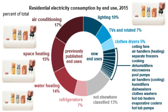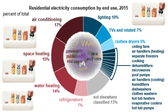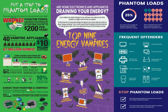Some typical offenders include cable boxes, internet modems, DVRs and VCRs, answering machines, faxes and printers, rechargeable battery chargers, remote controls, clock radios, computers and laptops, coffee makers, televisions, and microwaves.